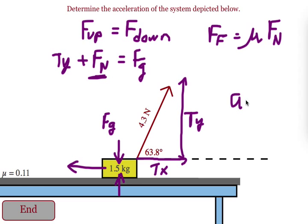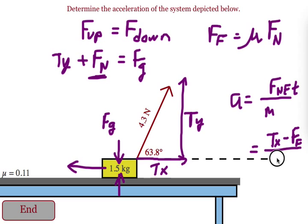Final step to get the acceleration. We do acceleration equals force net over mass. And for net force, we have the tension in the X going forward, and we have friction going backwards. So it would be tension in the X direction minus friction because it's in the opposite direction. It's hindering the motion divided by the mass of the object.